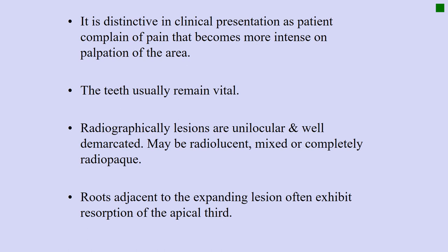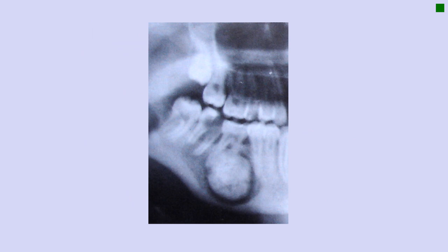Roots adjacent to the expanding lesions exhibit resorption of the apical third. Looking at this radiograph of a mandibular premolar, you can see the lesion appears mostly radiopaque with less radiolucency and a radiolucent rim around it, attached to the apical one-third. Note that the second molar in this patient has a large carious lesion communicating to the pulp with furcation involvement - so if this patient presented with severe pain, it would be important to isolate which tooth is causing the pain.